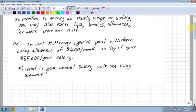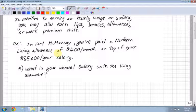For example, in Fort McMurray you're paid a Northern Living Allowance. If you work up north, you actually get paid a bit more because it's more difficult to live up there. Food costs a bit more and all that kind of stuff, so they pay you a bit more. You get a Northern Living Allowance of $1,200 per month on top of your $85,000 a year salary. What is your annual salary with the living allowance?